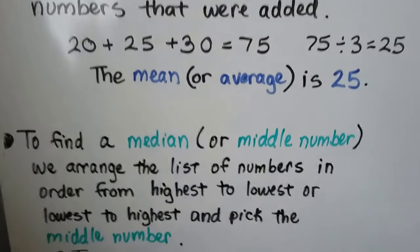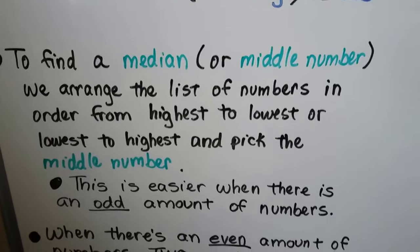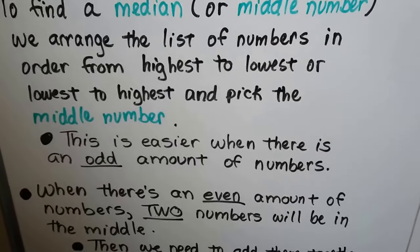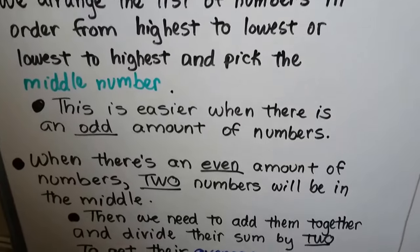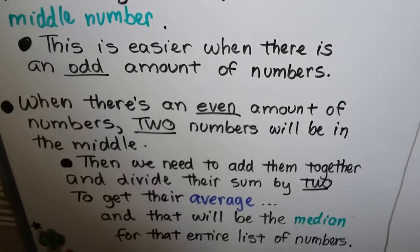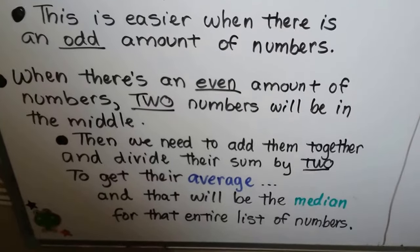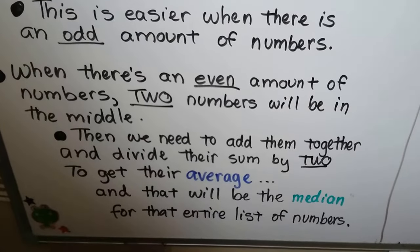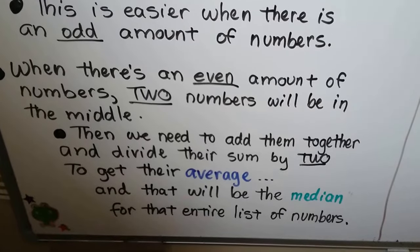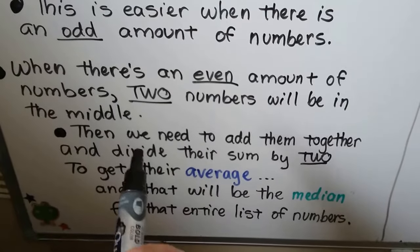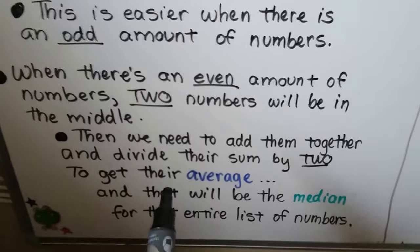To find a median or middle number, we arrange the list of numbers in order from highest to lowest or lowest to highest and pick the middle number. It's easier when there's an odd amount of numbers. When there's an even amount of numbers, two numbers will be in the middle. Then we need to add them together and divide their sum by two to get their average.